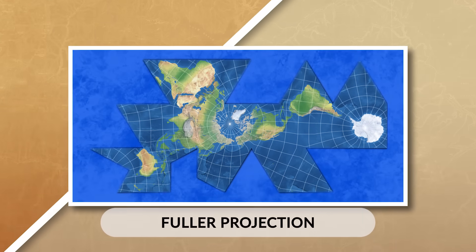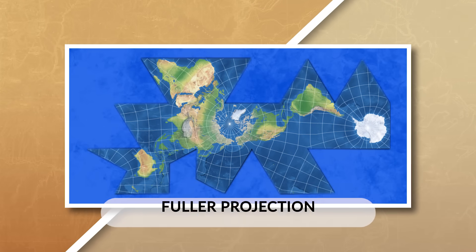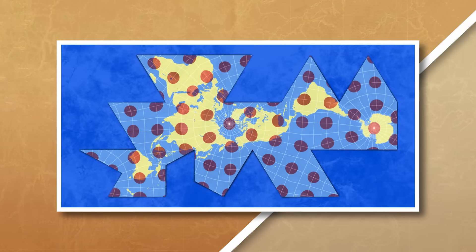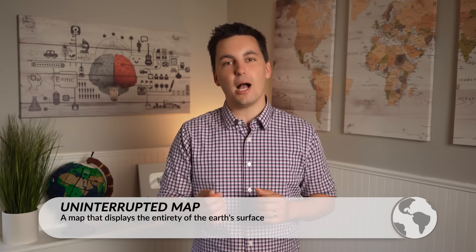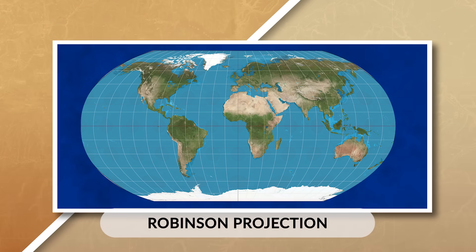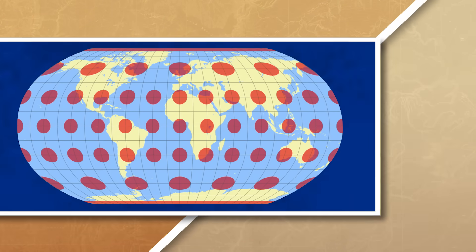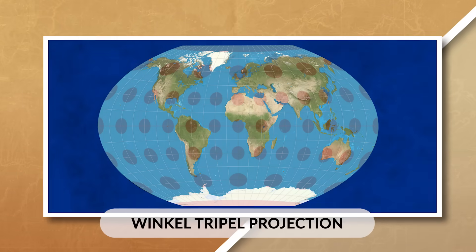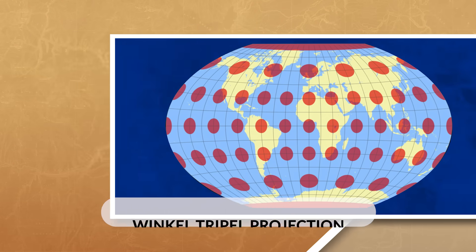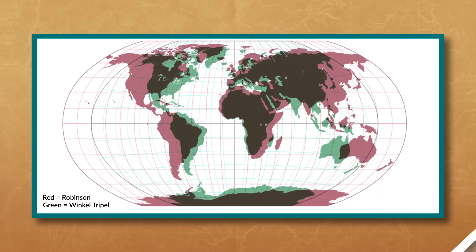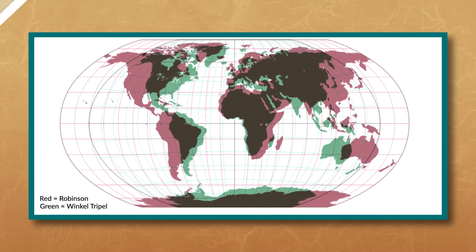Another interrupted map that we could use is the Fuller map projection. This projection shows landmasses without an interruption and maintains accurate size and shape, but it does not use the cardinal directions, which makes it kind of difficult for people to read. Plus, it still struggles with distortion, especially as you get farther away from the center point. If we go back to map projections that are uninterrupted, we could look at the Robinson projection. This map projection puts the majority of the distortion at the poles and maintains the true size and shape of the landmass.